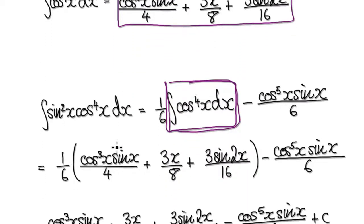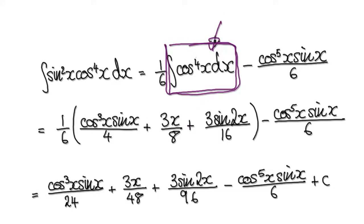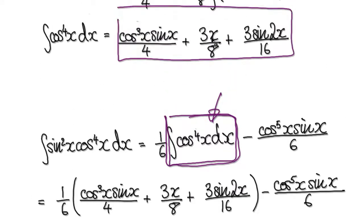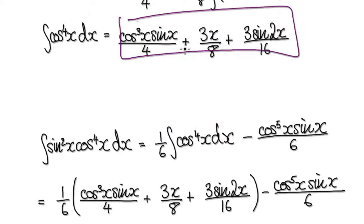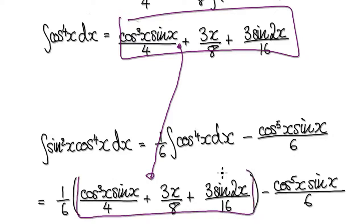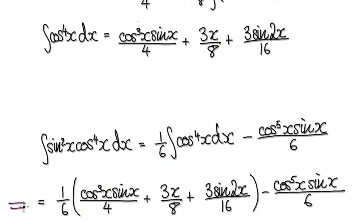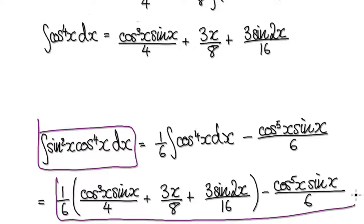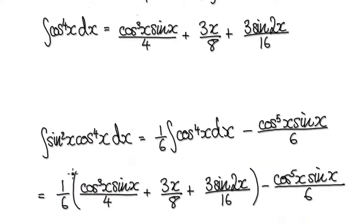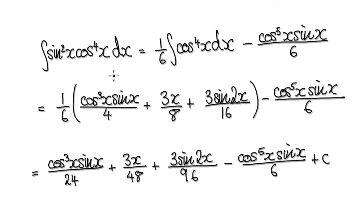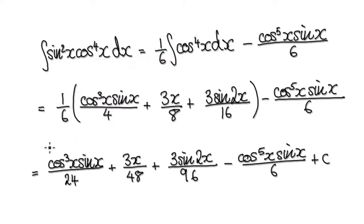We've just worked out cos to the power of 4. So we've just worked out this block here. Now put this block into here — you put this block into here, and then this thing here will then become this. So this thing here is equal to this whole thing here. So now it's just a matter of tidying this up — this times this, this times this, this times this — and your overall answer will be this.